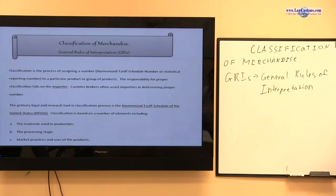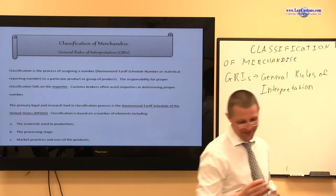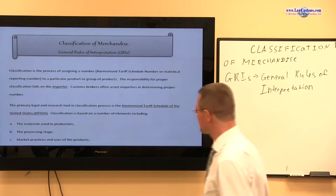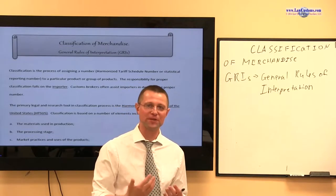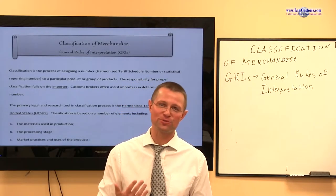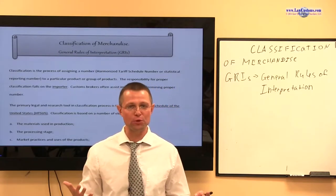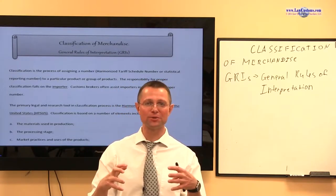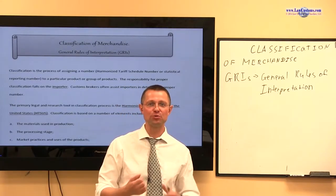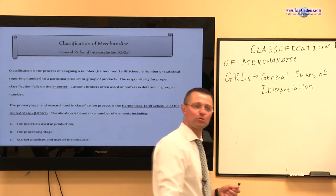GRIs — General Rules of Interpretation — are really the core of classification. This is like a constitution of the Harmonized Tariff Schedule of the United States, which is broad enough and at the same time narrow enough to enable a classifying party to assign the correct Harmonized Tariff Schedule number.